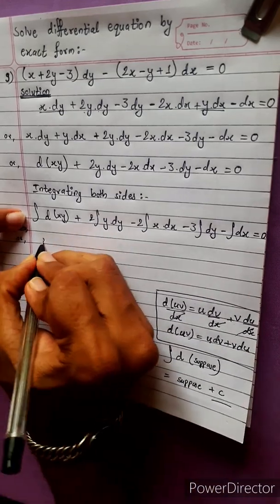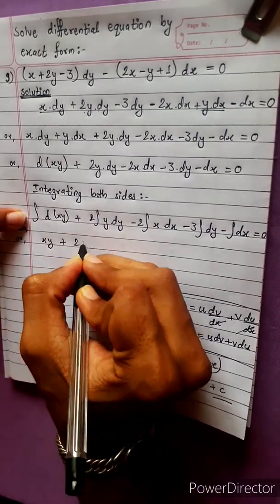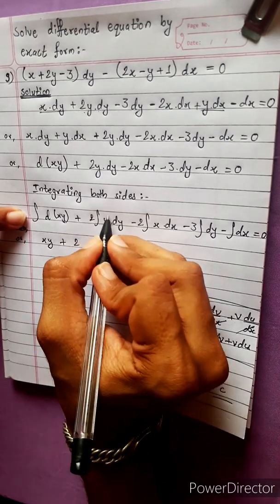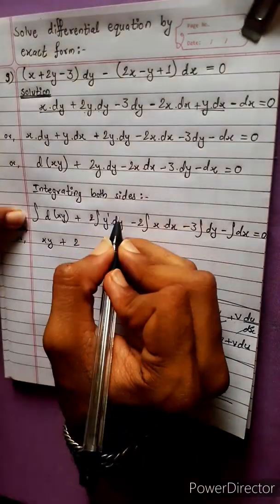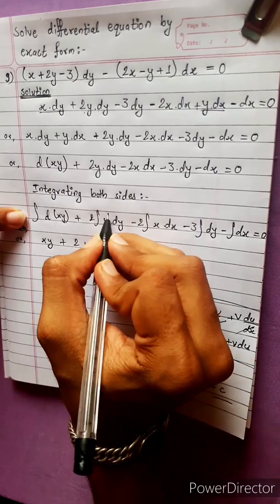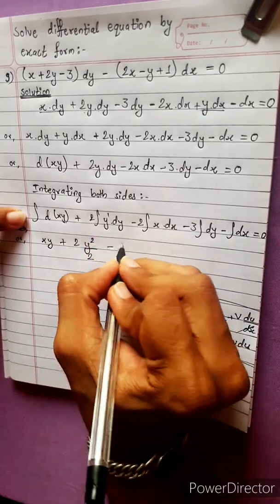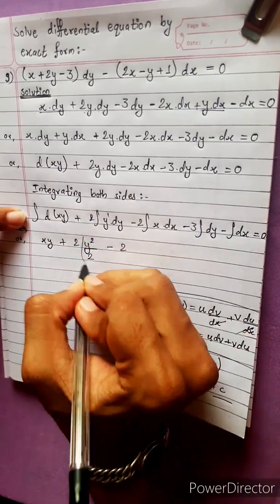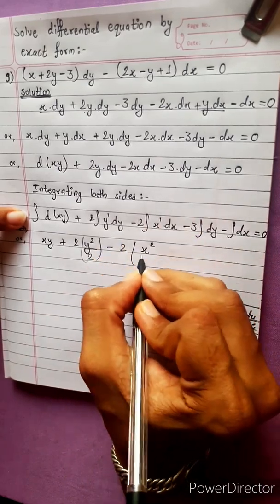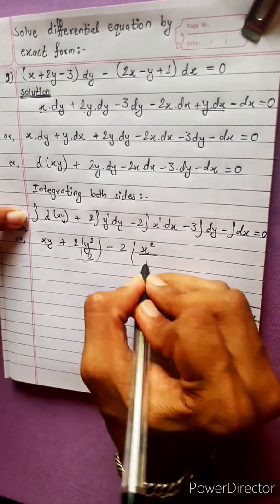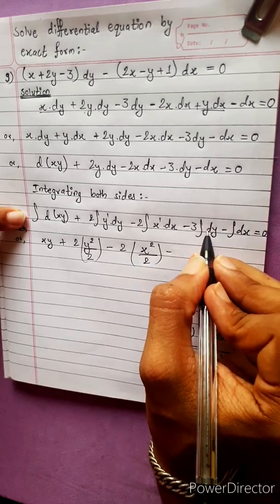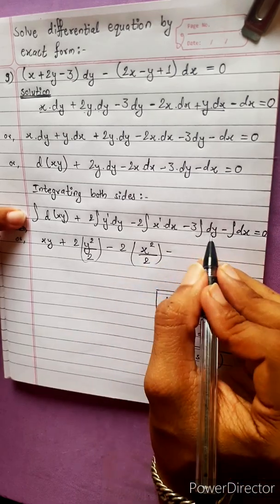We have xy plus 2 into y dy. y power 1, and 1 plus 1 is 2. So y squared divided by 2, and for x: x power 1 plus 1 is 2, so x squared divided by 2, minus 3y, which gives integration result 1 plus 1 is 2.